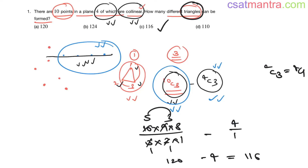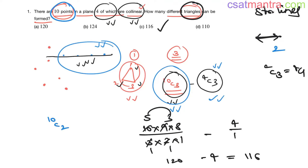Now let's say the question asks for the number of different straight lines that can be formed. To draw a straight line you need two points. Again this problem is based on combination — a straight line from point A to point B is the same as from B to A, so it's not a permutation problem. Out of 10 points, how many ways can we choose two points? That is 10C2.